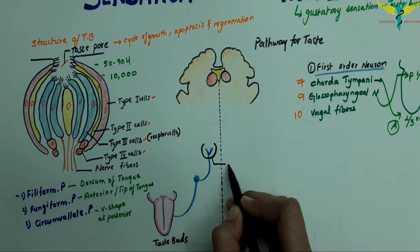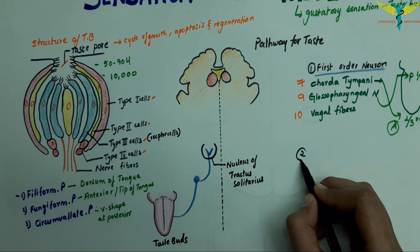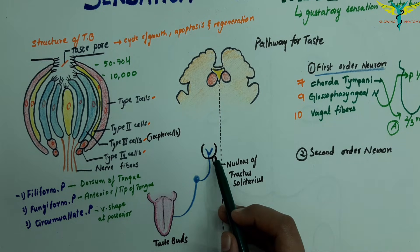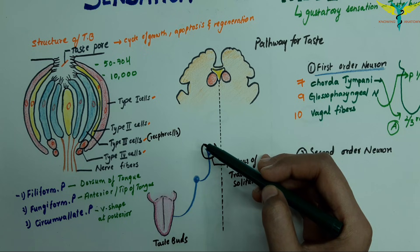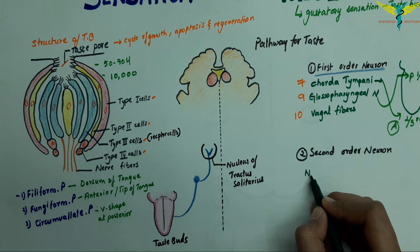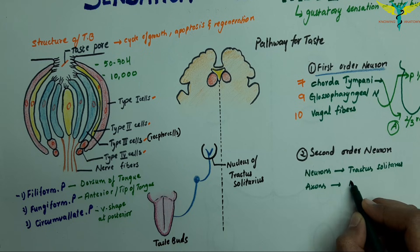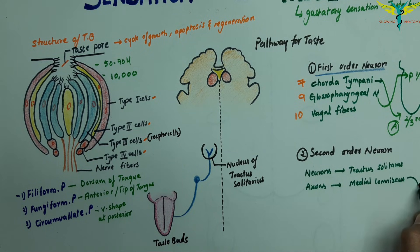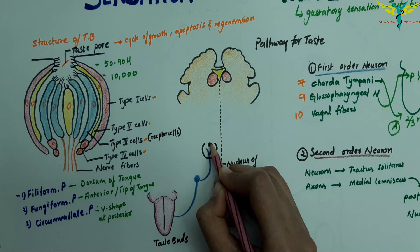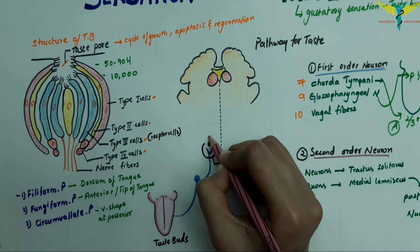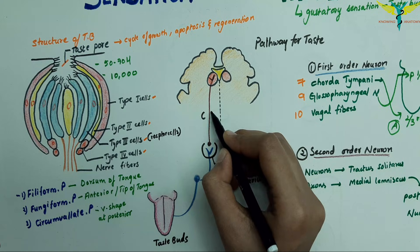This is the nucleus of tractus solitarius. The second-order neurons are in the nucleus of the tractus solitarius, and their axons run through the medial lemniscus, terminating in the posterior ventral nucleus of the thalamus.